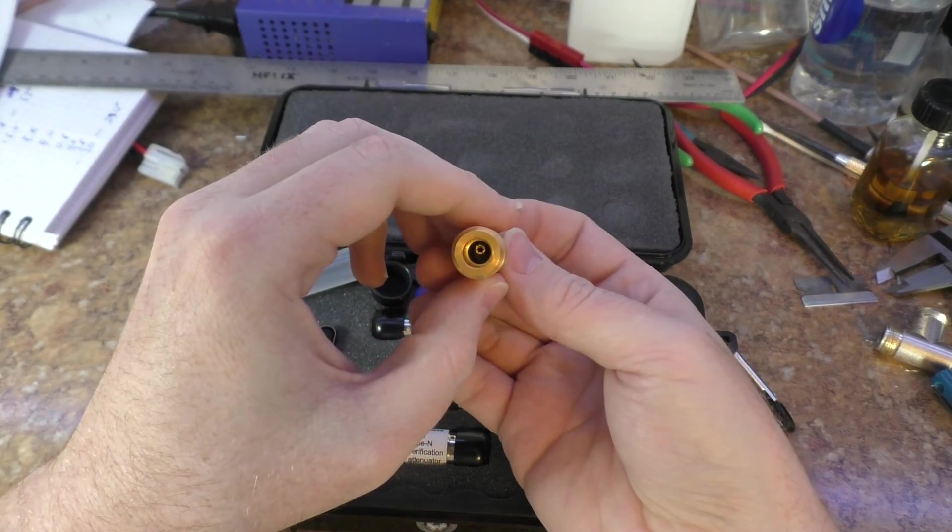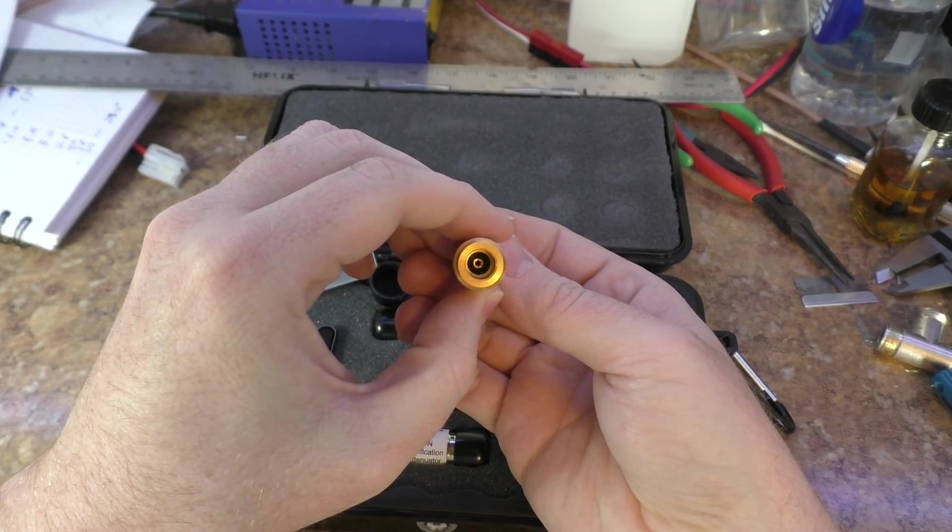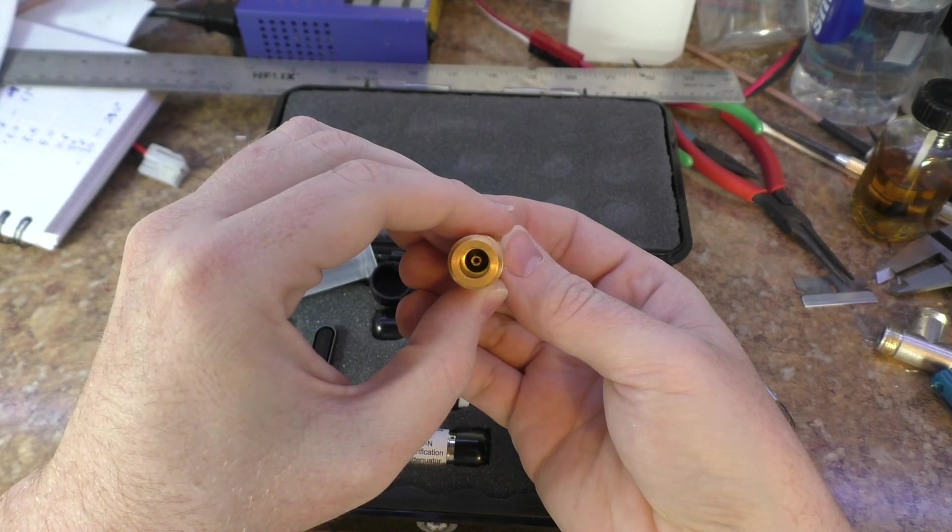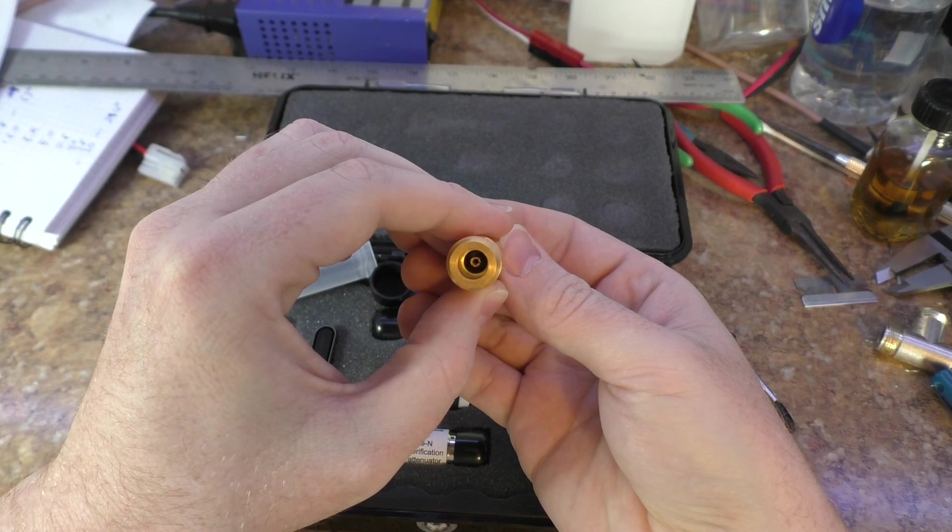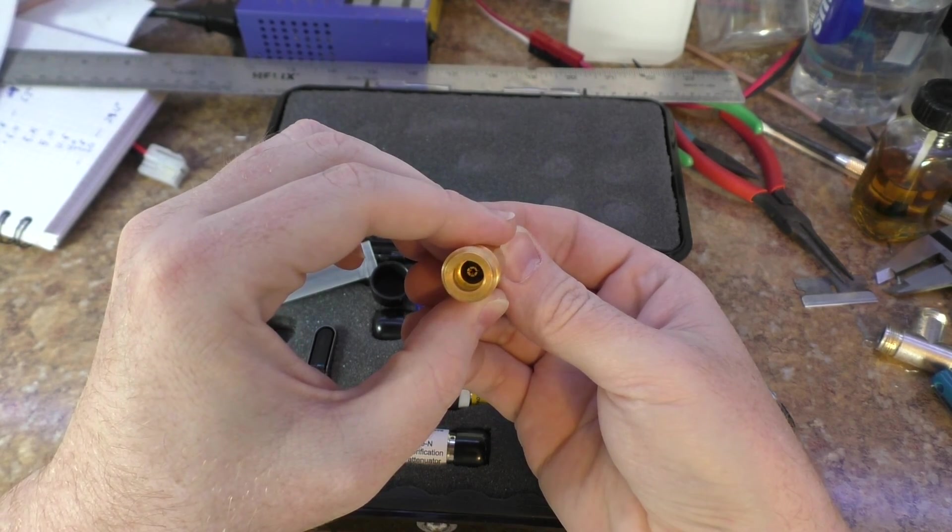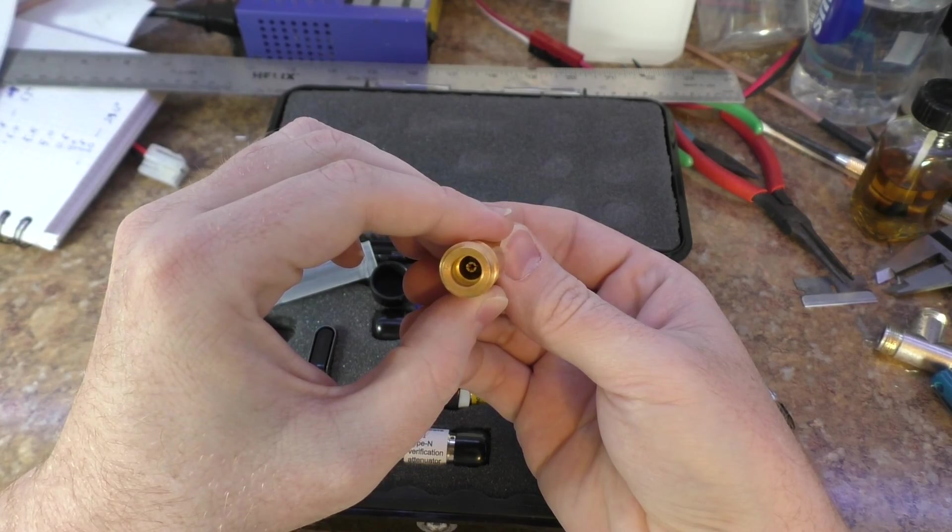You don't want to touch that. You basically put this through there like this and it corrects the N male part of it so that it is true and correct, because the N male is pointed. It's not a fixed impedance at the end of it.